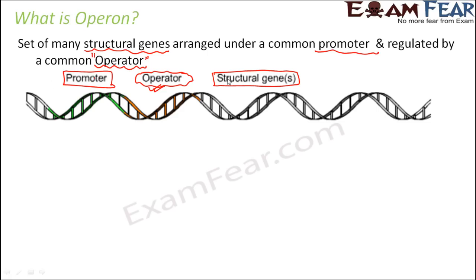Promoter, structural gene — these are all certain portions of DNA. Similarly, the operator is also a portion of DNA, always located adjacent to the promoter. When structural genes are turned off, no transcription takes place, no mRNA will be formed, and protein synthesis will not take place. If the genes are turned on, mRNA will be produced and protein synthesis will also take place.